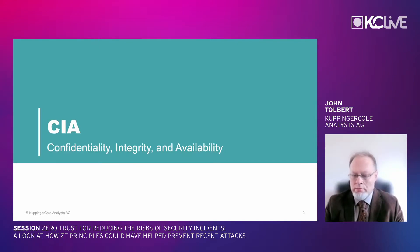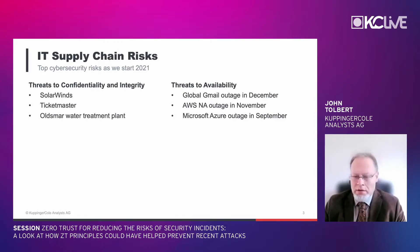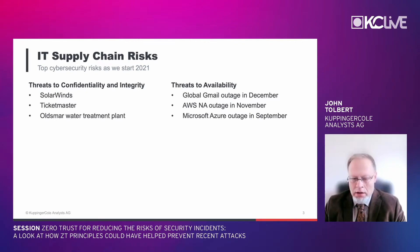Some of the risks that made the news in late 2020 and continue today — as they relate to confidentiality and integrity — are the SolarWinds incident (also called Sunburst or SolarGate), the Ticketmaster finding, and the Oldsmar water treatment plant in Florida. On the availability side, there were significant cloud outages over the last few months impacting consumers and businesses, making availability an ever-present concern heading into 2021.